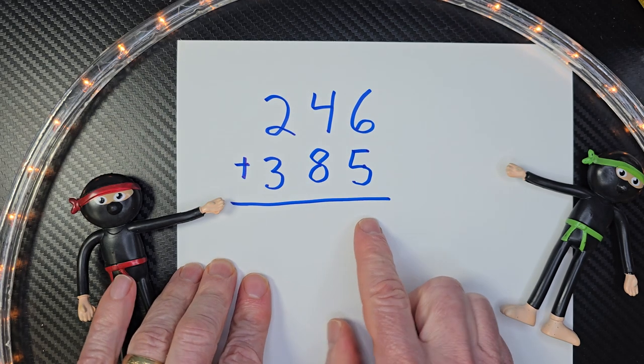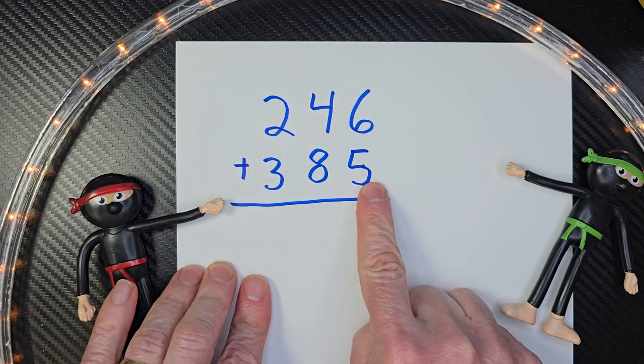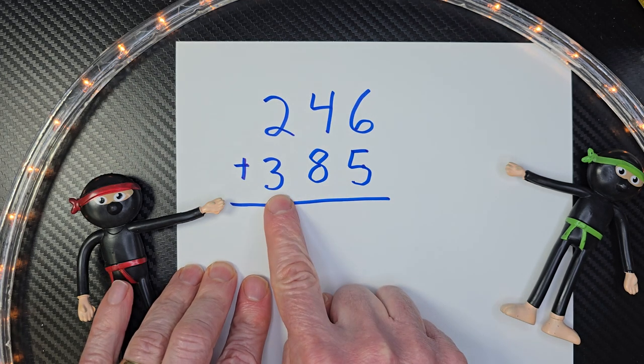In this process, we're going to start with the ones first, then we're going to add the tens and then finally the hundreds.